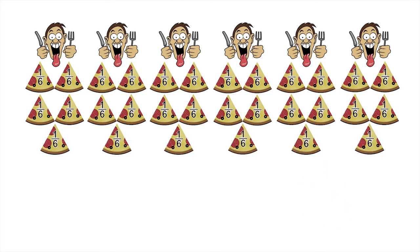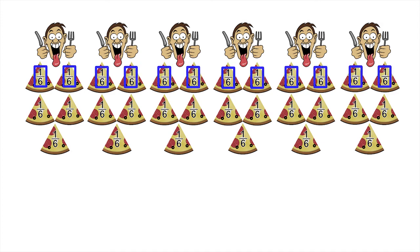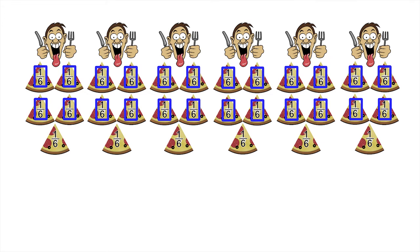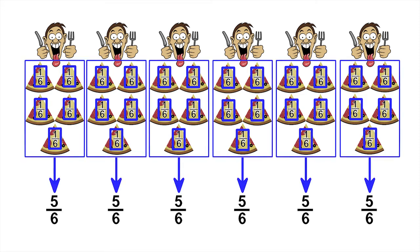Each customer ends up with one sixth of the first pizza, one sixth of the second pizza, one sixth of the third pizza, one sixth of the fourth pizza, and one sixth of the fifth pizza, which adds up to a total of five sixths for each person.